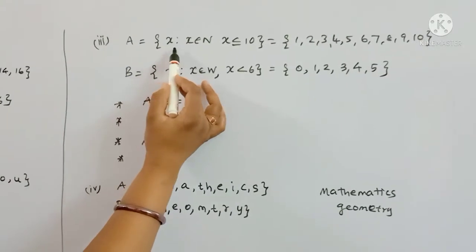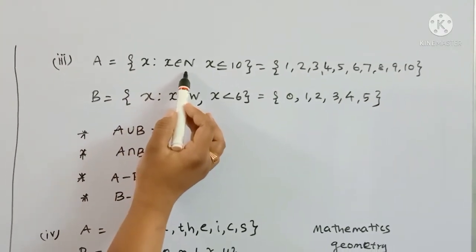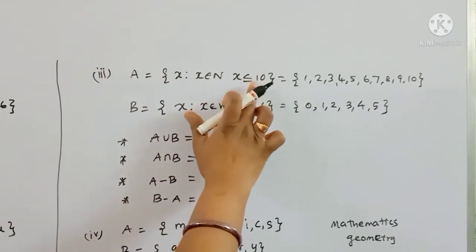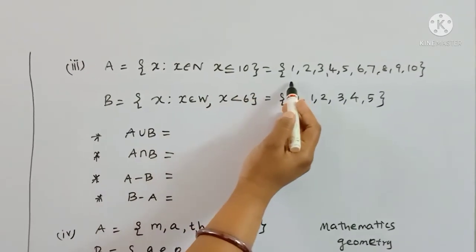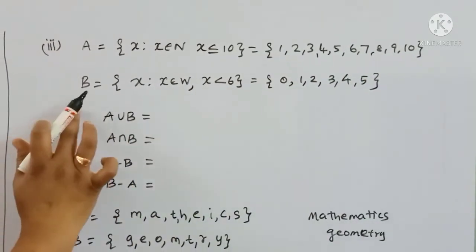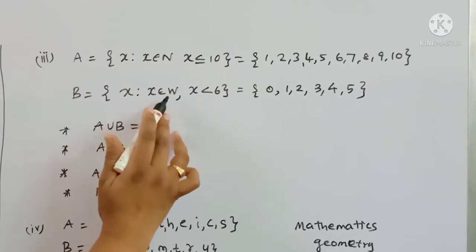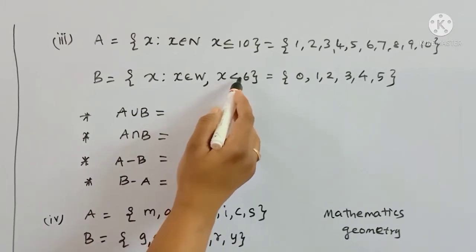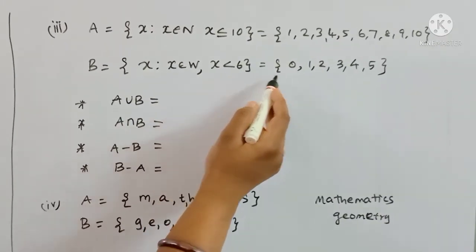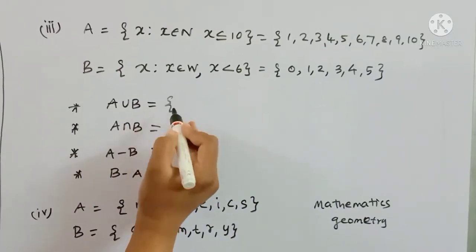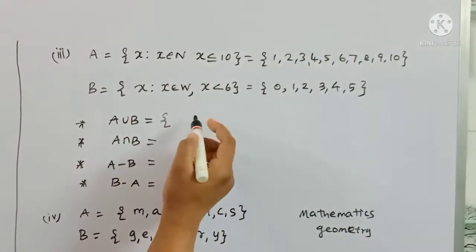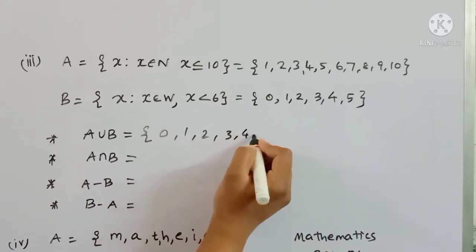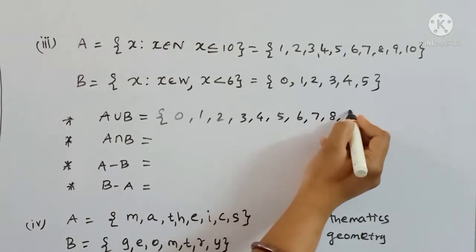Next, A minus B — elements in A not in B: A, B, C. Then B minus A — elements in B not in A: U. The third subdivision uses set builder form: x such that x belongs to natural numbers, x ≤ 10, so x = {1, 2, 3, 4, ..., 10}.